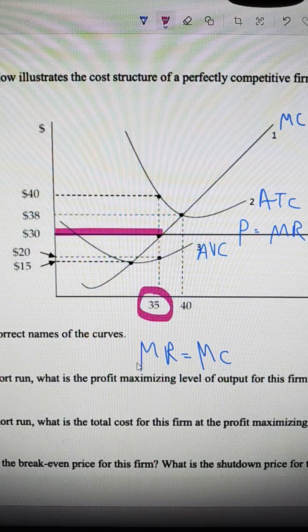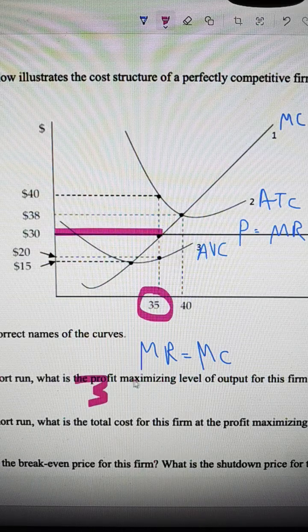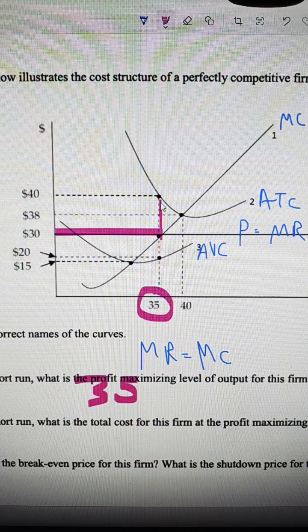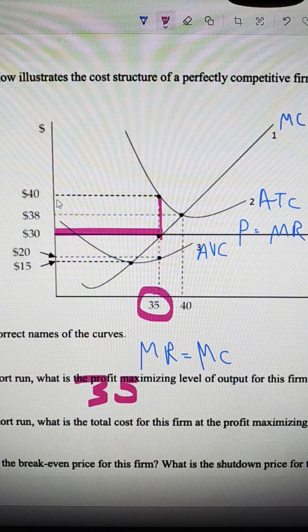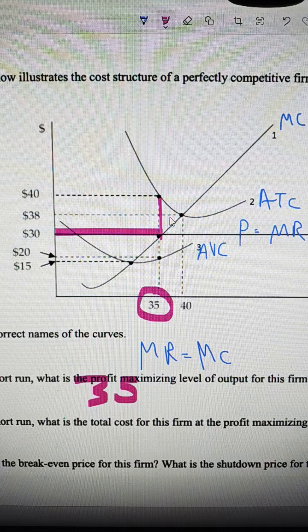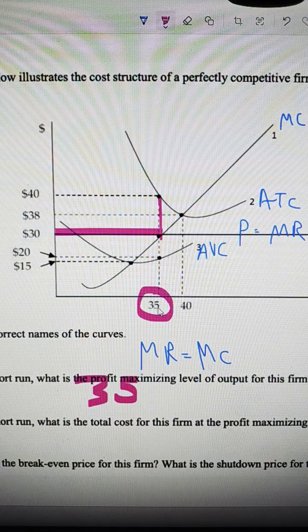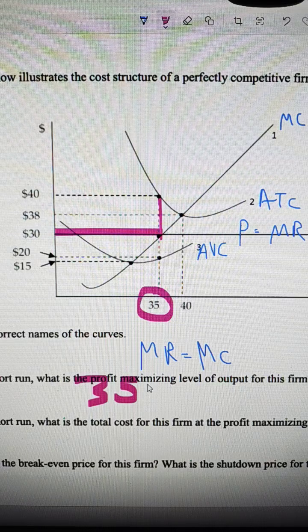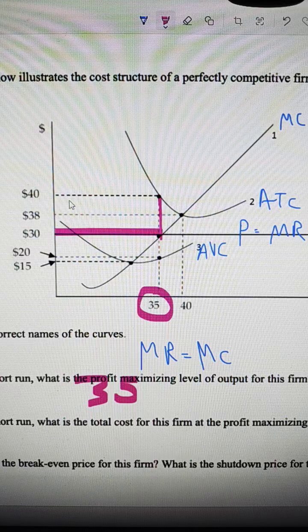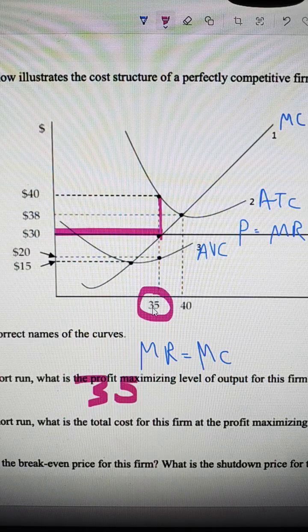So 35 is the profit maximizing output. They are losing money because the average total cost is 40, so they're going to lose $10. And when they produce 35 units, they lose 350. The total cost would be 400 times 350.